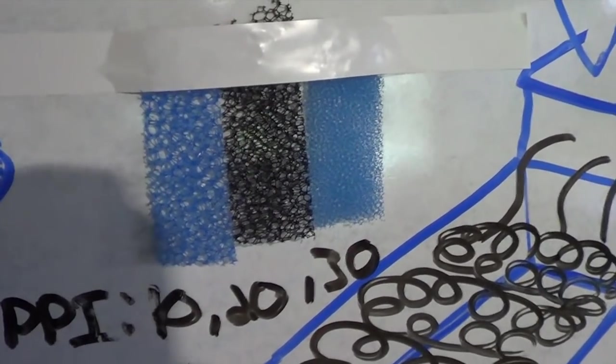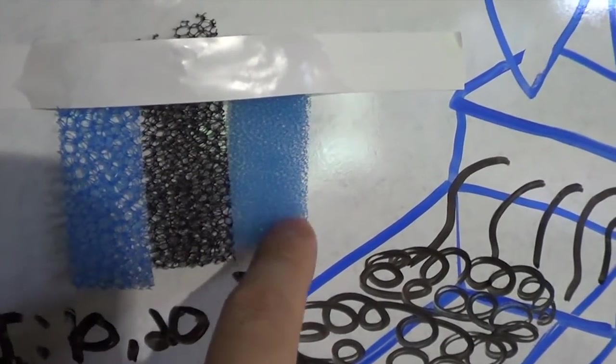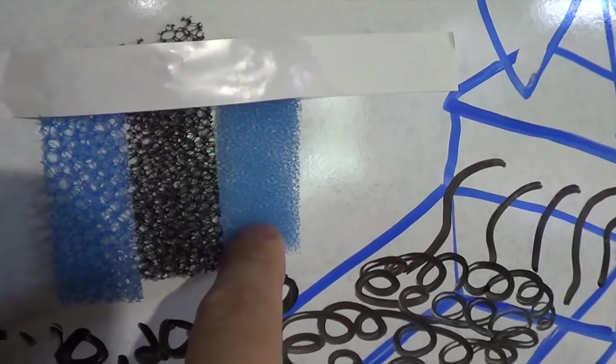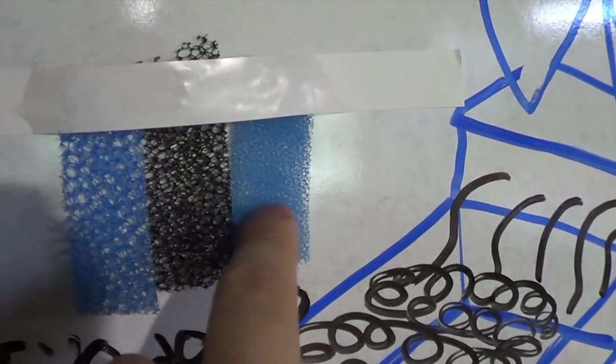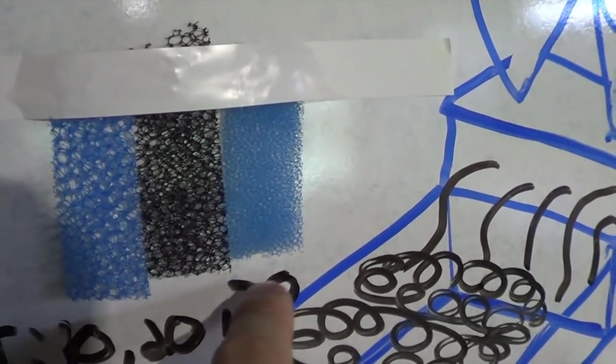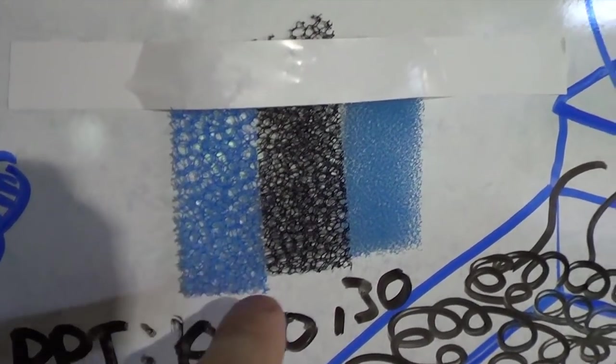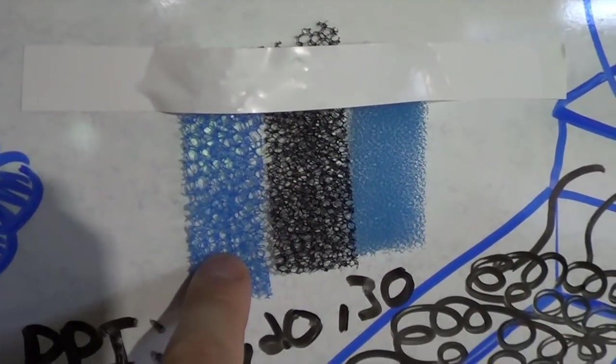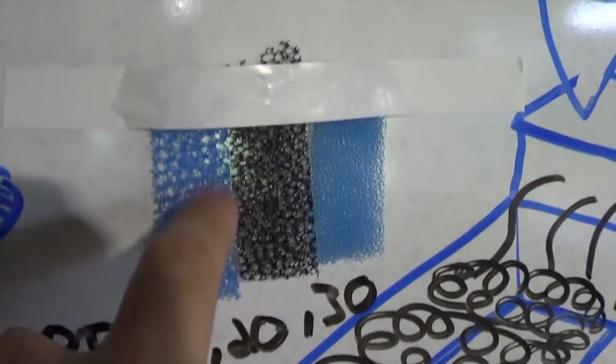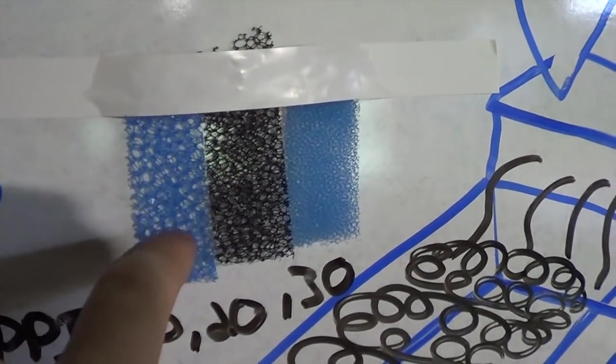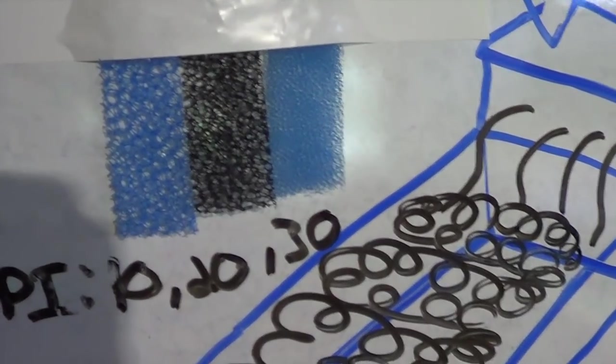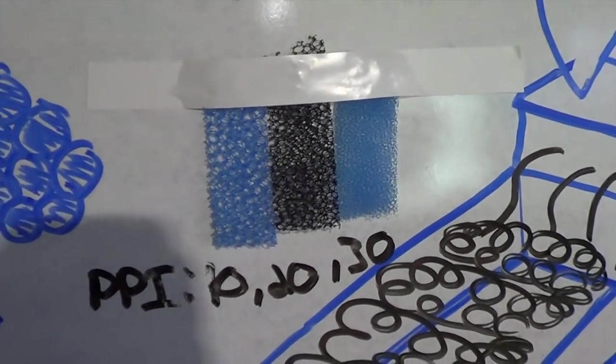But for aquariums, these are basically the three that work really well. If you're doing something with very small fish, very small fry, you might want to go with 30 or 40. If you're doing stuff with larger fish and you don't want it to get clogged up as easily, like a bubble filter or something like that, you might want to go with 10 or 20 PPI foam.